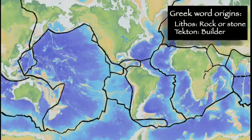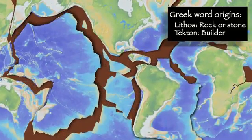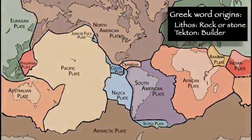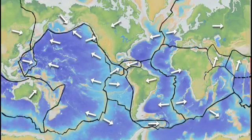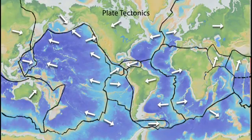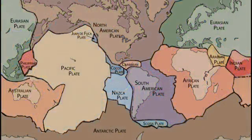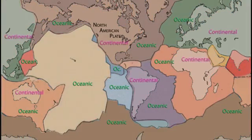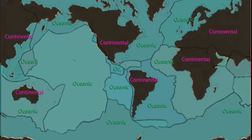The cool, rigid outer layer of the Earth, the lithosphere, is broken into massive plates. There are about a dozen major plates and many smaller plates in continuous motion as they collide with, slide under, or move past each other in a process known as plate tectonics. A plate may be entirely oceanic lithosphere, like the Pacific plate, or like the North American plate, can be part oceanic and part continental lithosphere.